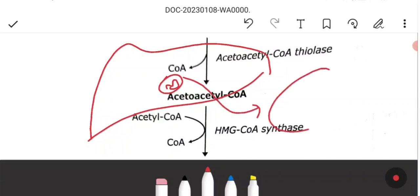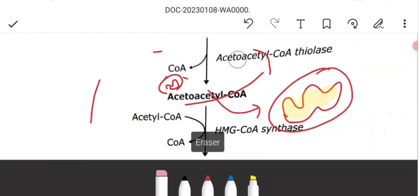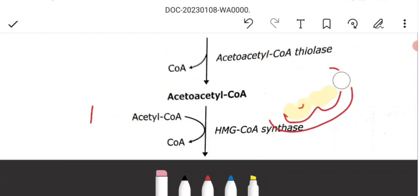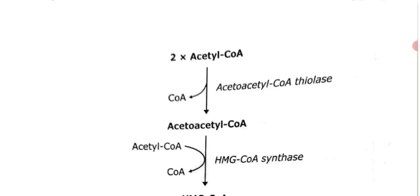Ketogenesis takes place in the mitochondria — specifically in the mitochondrial matrix of liver cells. The reactions begin with two acetyl-CoA molecules undergoing condensation. The enzyme involved is thiolase, and the product formed is acetoacetyl-CoA.